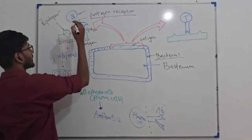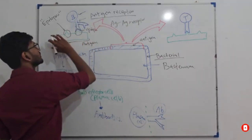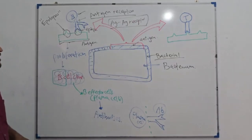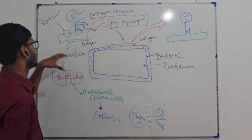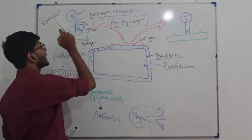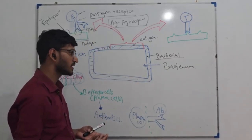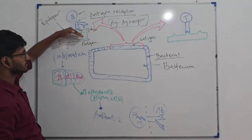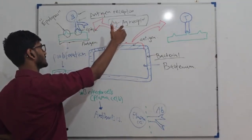So this antigen receptor attaches to the epitope and detects the antigen which is a part of this bacterium. The B cell has a protein known as an antigen receptor bound to it. There are sites in the antigen receptor which attach to the epitope, so the antigen receptor goes and binds to the epitope and identifies it, forming an antigen-antigen receptor complex. As soon as this complex is formed, the B cell can identify the antigen and understand the nature of the pathogen - what disease-causing toxins it has.